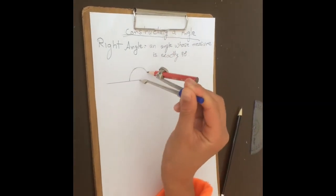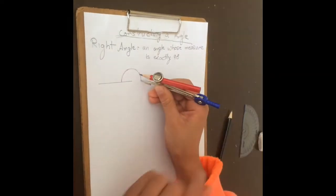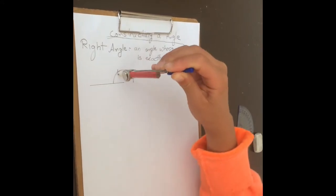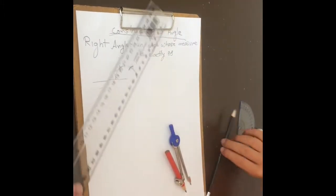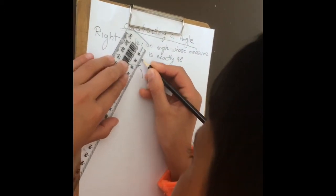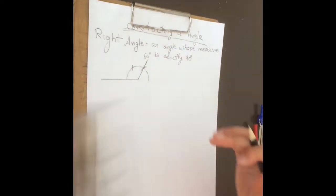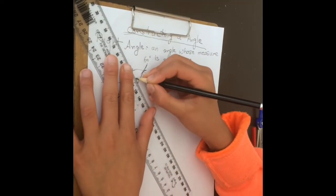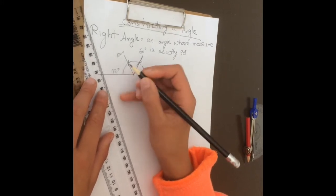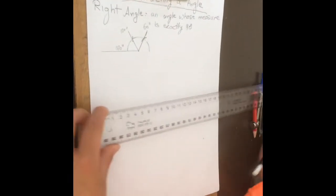Do a half circle with a compass. Once we've done that, find a point right here and draw an arc. Then draw another arc, go to this intersection and draw another arc. This right here equals 60 degrees. This right here equals 120 degrees, and this right here is 180 degrees — 180 degrees is always a straight line. Remember that.